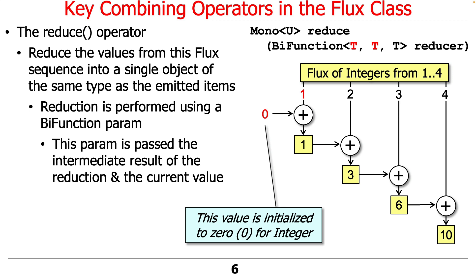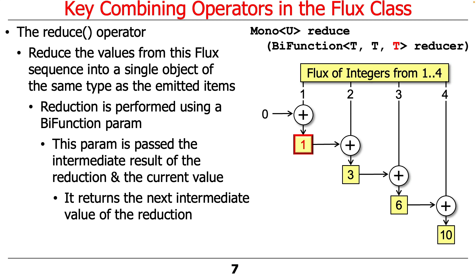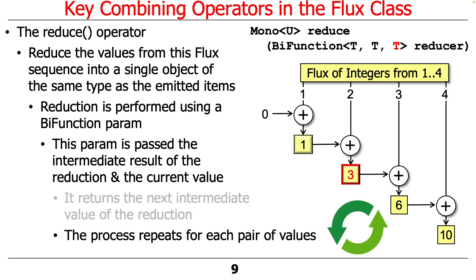Here's an example of this. Let's say we're going to use this for some kind of summation. We're going to have a flux of integers from one to four. We're going to start out with an initial value of zero — that's the default, which makes sense for summation. So one plus zero yields one; that becomes the new accumulated value. Then one plus two is three, three plus three is six, and four plus six is ten. The result of one reduction is used as the input for the next, until we reduce the whole thing to a single value.